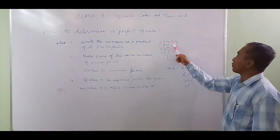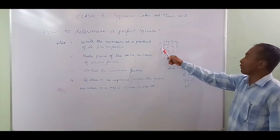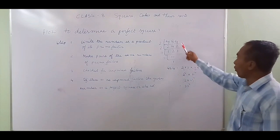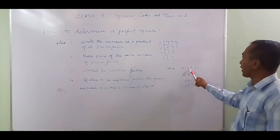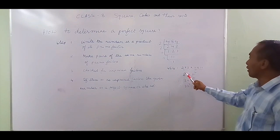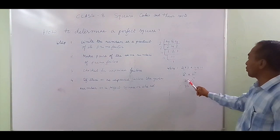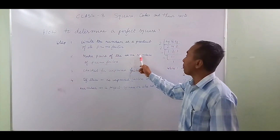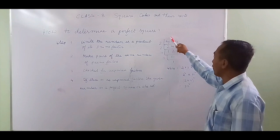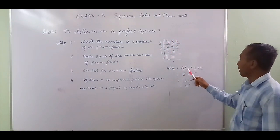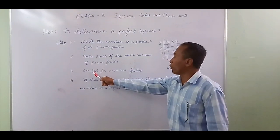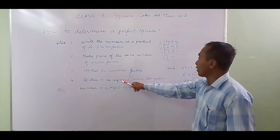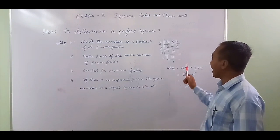For 484: dividing by 2, then 2 again gives 121, then 11 and 11. So the prime factors are 2, 2, 11, 11. Making pairs: 2 squared into 11 squared, which gives 22 squared. Since all prime factors form pairs with no unpaired factor, 484 is a perfect square. If there is any unpaired factor, the number is not a perfect square.